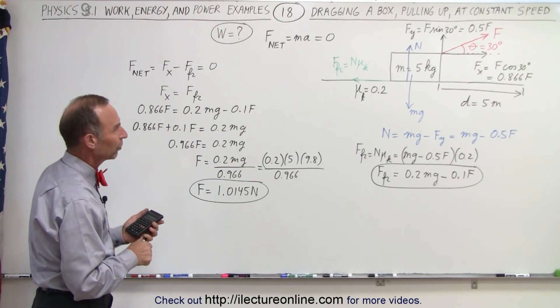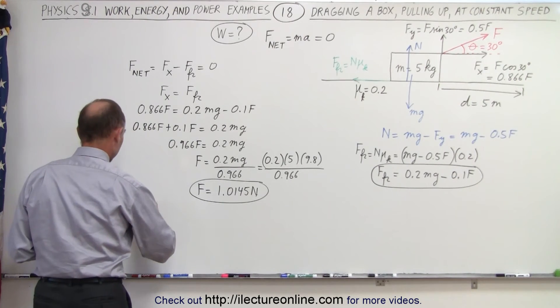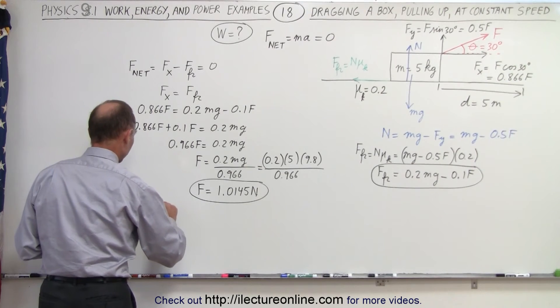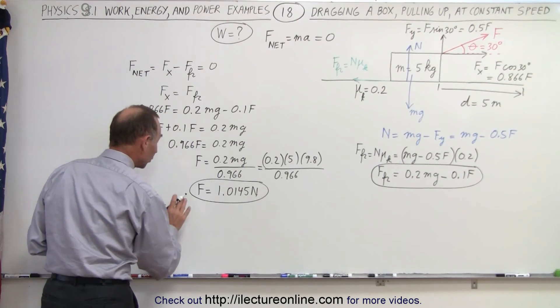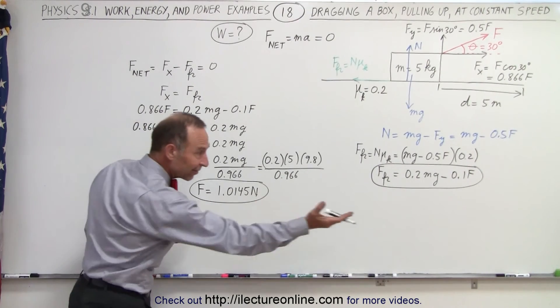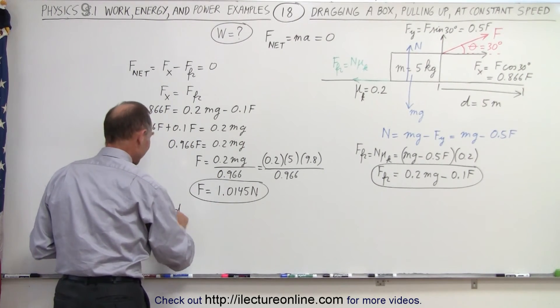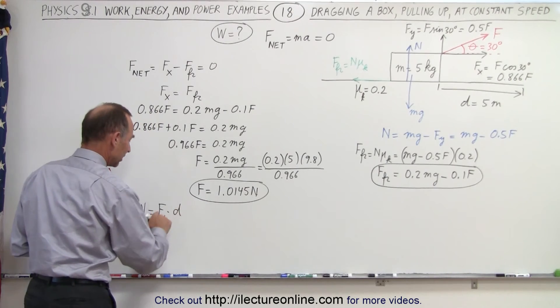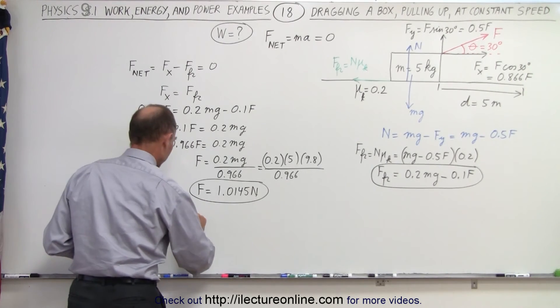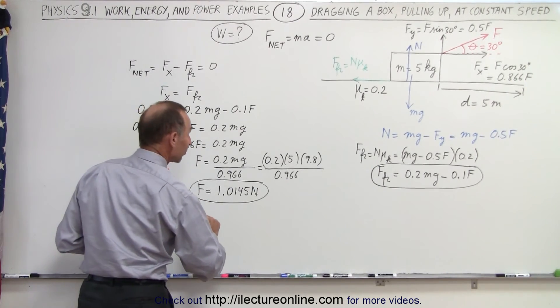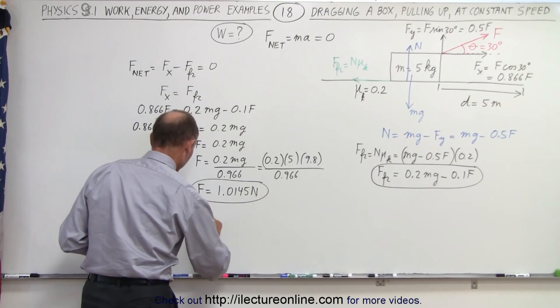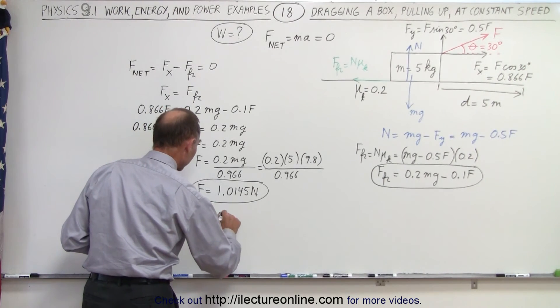So now we need to find the work done, and the work done is equal to the force times the displacement. Notice it's the force acting in the same direction as the displacement, which is f_x. So in this case that will be f_x times d. We can't take f; we need to take f_x. And so this is equal to f times the cosine of 30 degrees, or 0.866f, which is the component of the force acting in the same direction as the displacement, and we multiply that times 5 meters.